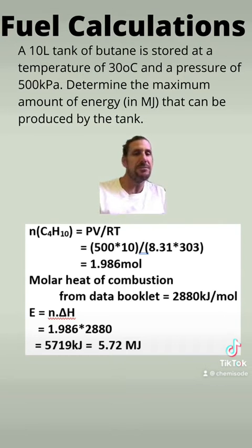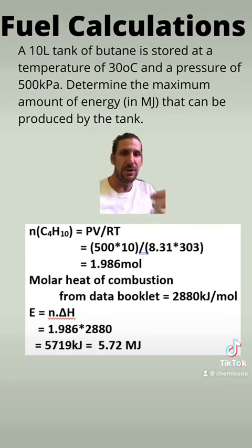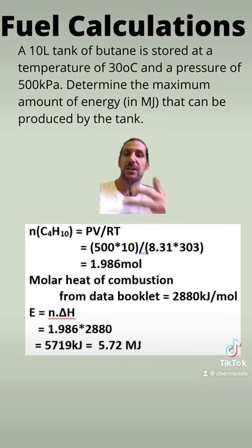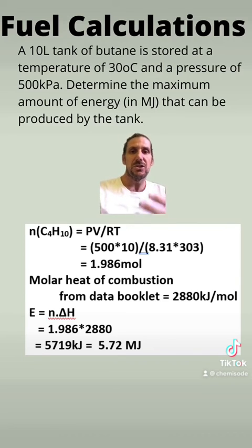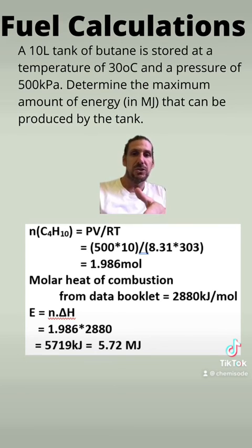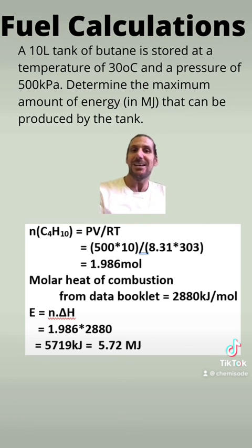The final trick here is that they've asked you to express the energy content in megajoules. In your data booklet, the value is given in kilojoules per mole, so your calculation will give you kilojoules. To go from kilojoules to megajoules is just a factor of a thousand — you divide by a thousand to get megajoules. In chemistry you need to know your unit prefixes: joules to kilojoules to megajoules, or milligrams to grams to kilograms. The prefix mega means a million, which is a thousand times bigger than kilo.